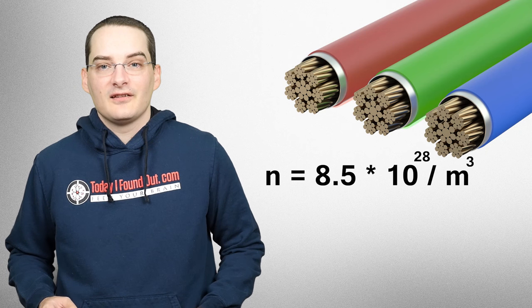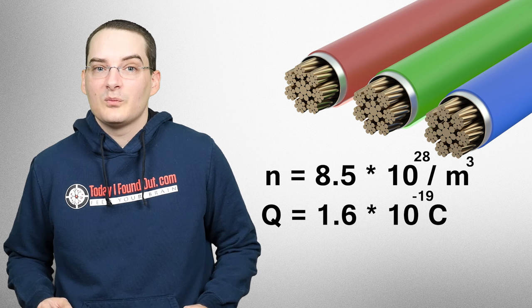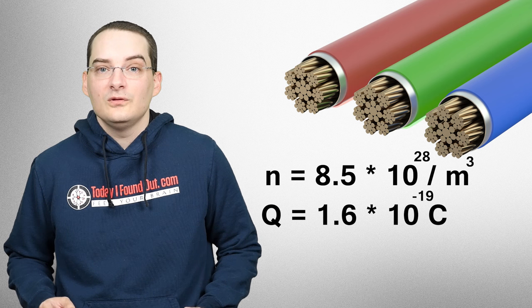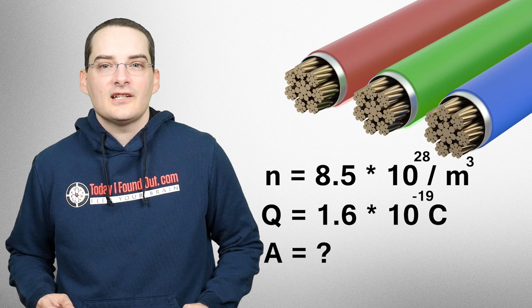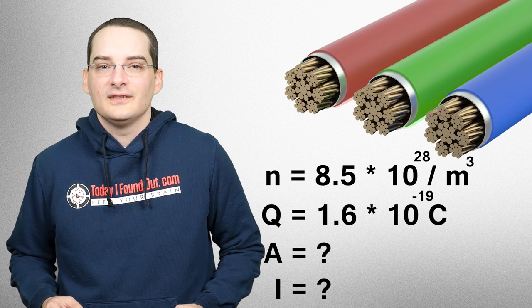Since the number of electrons in a copper wire is 8.5 times 10 to the 28th per meter cubed, and the charge of an electron is 1.6 times 10 to the 19th coulombs, if we also know the cross sectional area and the current, we can calculate the electron's drift velocity.